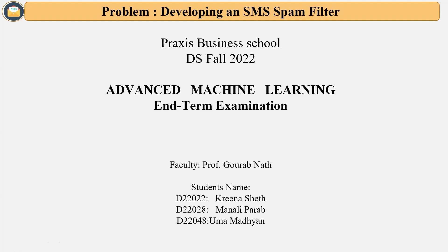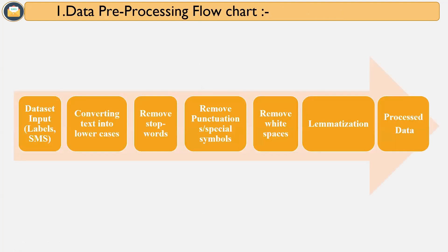Firstly, we performed data pre-processing. For data pre-processing, we collected a diverse dataset of SMS messages including both ham and spam. After that, we performed data cleaning — removing irrelevant or redundant information like special characters and punctuation. Then we performed text normalization, converting all text to lowercase and standardizing the format of the text.